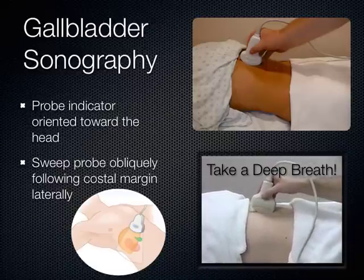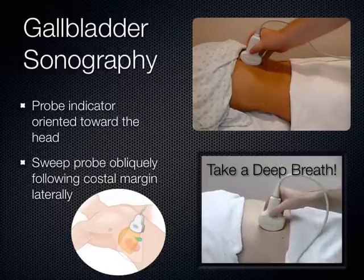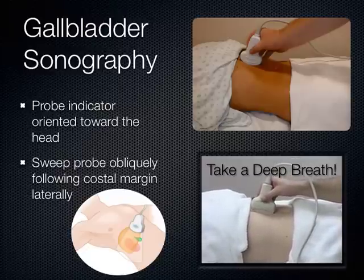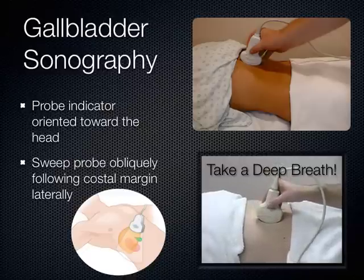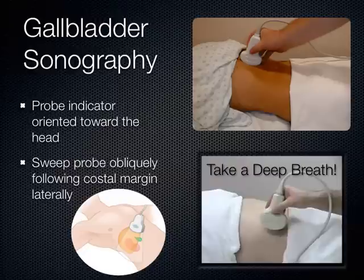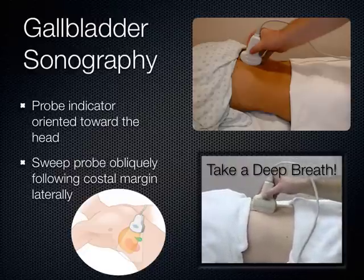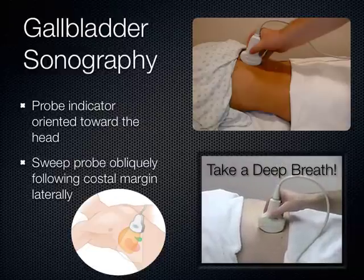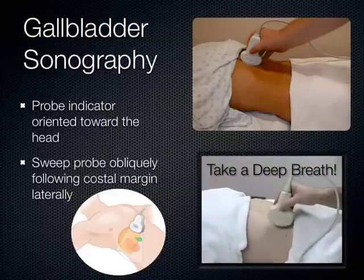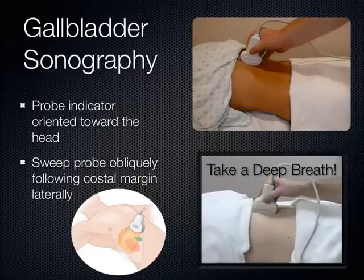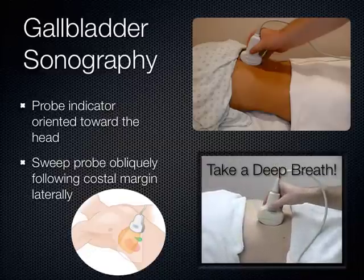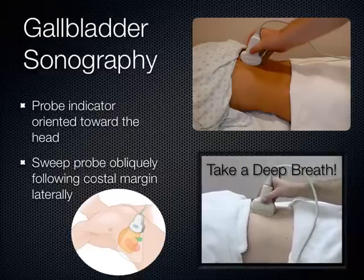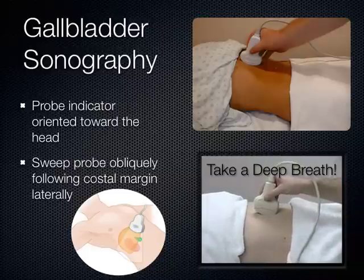This is gallbladder ultrasonography 101. What you do is something called a subcostal sweep — you take the indicator and aim it towards the patient's head, then have the patient take a deep breath, and you follow along the costal margin. If you reach on yourself and feel your ribs where they end at the xiphoid process, you can feel how your costal margin becomes more prominent when you take a deeper breath. The patient takes a deep breath and you slide right along that inferior costal margin. There are so many anechoic structures seen on the screen when you do this that sometimes you need a landmark to help identify the gallbladder.